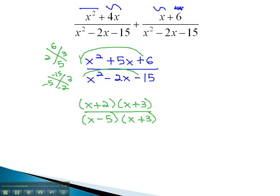Notice, now that we're factored, we do have a common factor that can divide out. This leaves us with our final answer, x plus 2 over x minus 5.